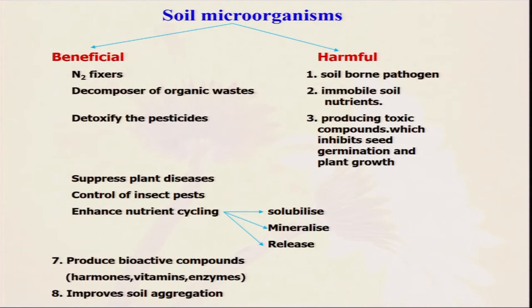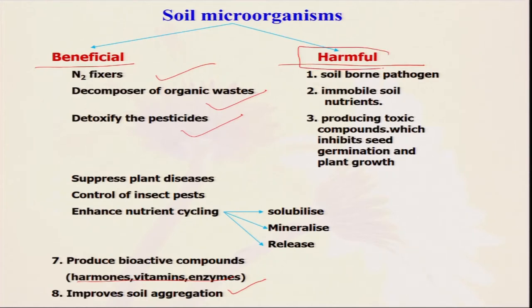We can divide soil microorganisms into two types — beneficial and harmful. Under the beneficial category there are nitrogen fixers, decomposers of organic waste, detoxifiers of pesticides, and producers of different hormones, vitamins and enzymes. They also improve soil aggregation. There are also some harmful microorganisms — soil-borne pathogens. Lots of pests and disease attacks in plants keep their spores or germs in the soil, and whenever we grow the next crop in the next year, they help infect plants again. In this condition, in organic farming we always advocate the use of crop rotation. If this year we grow rice, we can grow next year soybean, groundnut, or some other crops. By this process we can reduce the population of harmful microorganisms and enhance the population of beneficial organisms.